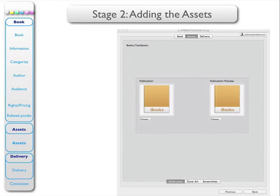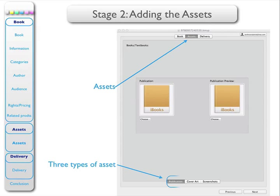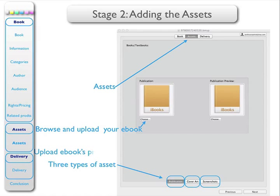We now come to stage 2, which is adding the assets. There are 3 types of assets: the publication itself, the cover art, and the screenshots. Go to your computer, browse it, and choose your iBook — that is the main text. You will also have prepared a preview, so once again upload the preview from your computer. That's the publication.